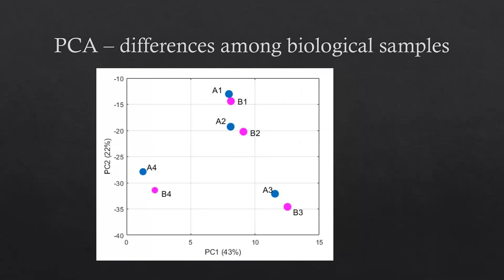Here is another example where we use PCA on eight samples. There are two conditions, A and B, in different colors. In general, we cannot see significant difference between group A and B.